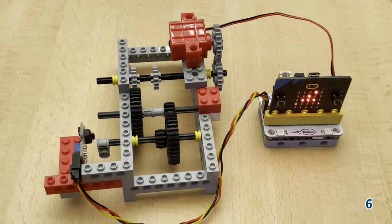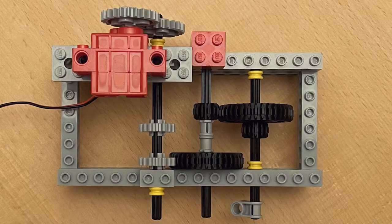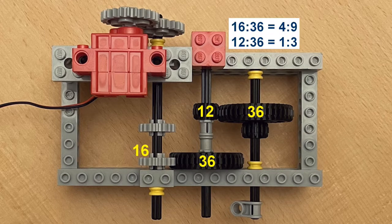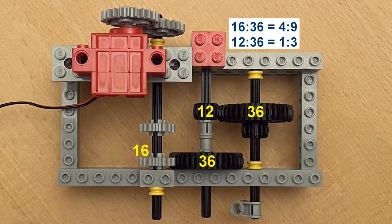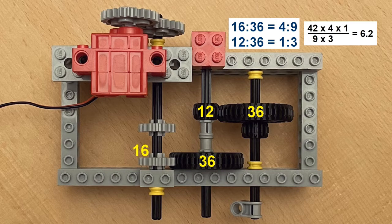We will now look at how we can calculate the number of turns. Here you see the number of teeth at the active gear wheels. Now we can set up these ratios which can be abbreviated in this way. The motor rotates 42 times in 30 seconds. The drive shaft does the same as they have equal gear wheels. That is why we get this fraction.